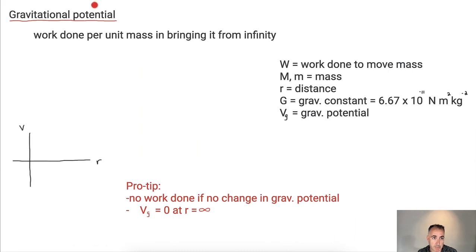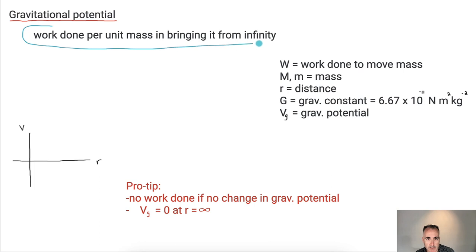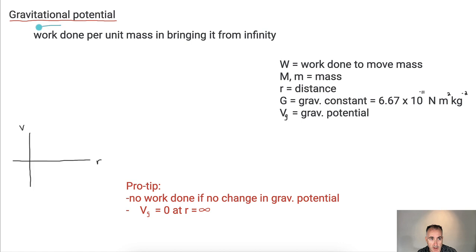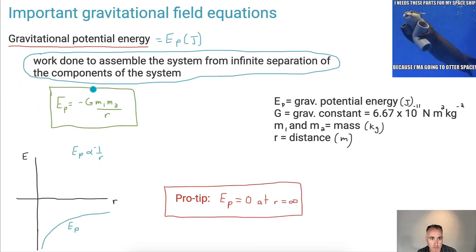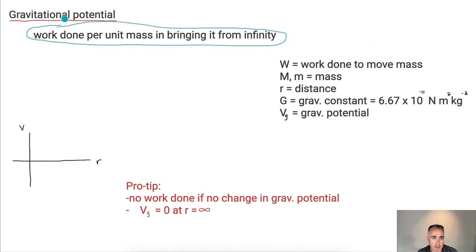We also have something called gravitational potential, which sounds similar but is slightly different. While gravitational potential energy is the total work done, gravitational potential is the work done per unit mass. So essentially we drop one of the masses from the equation.